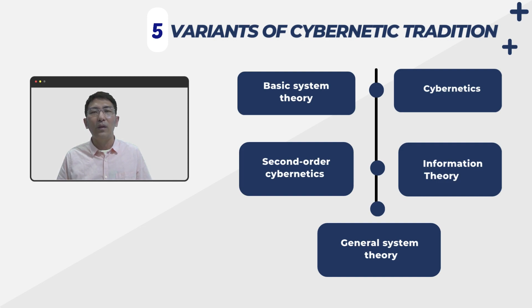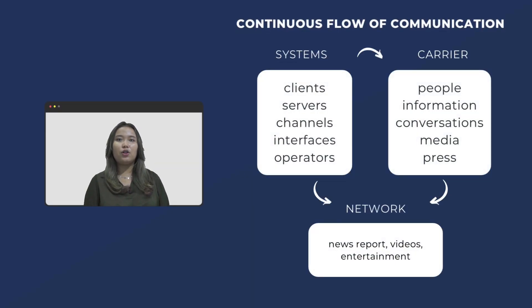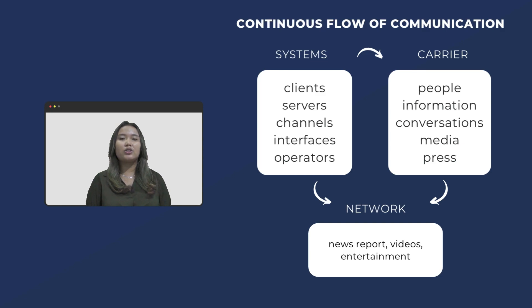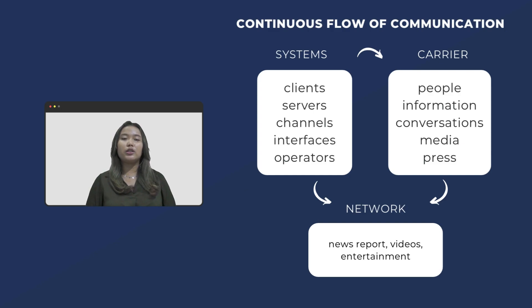A system in the cybernetics tradition takes in input from the environment, processes them, and creates outputs that are put back into the environment. Cybernetics is about having a goal and taking action to achieve that goal, knowing whether you have reached your goal through feedback. In systems there are clients, channels, interfaces, operators, and information carriers including people, conversation, media, and press, which network the world through news reports, videos, entertainment, and any form of communication.